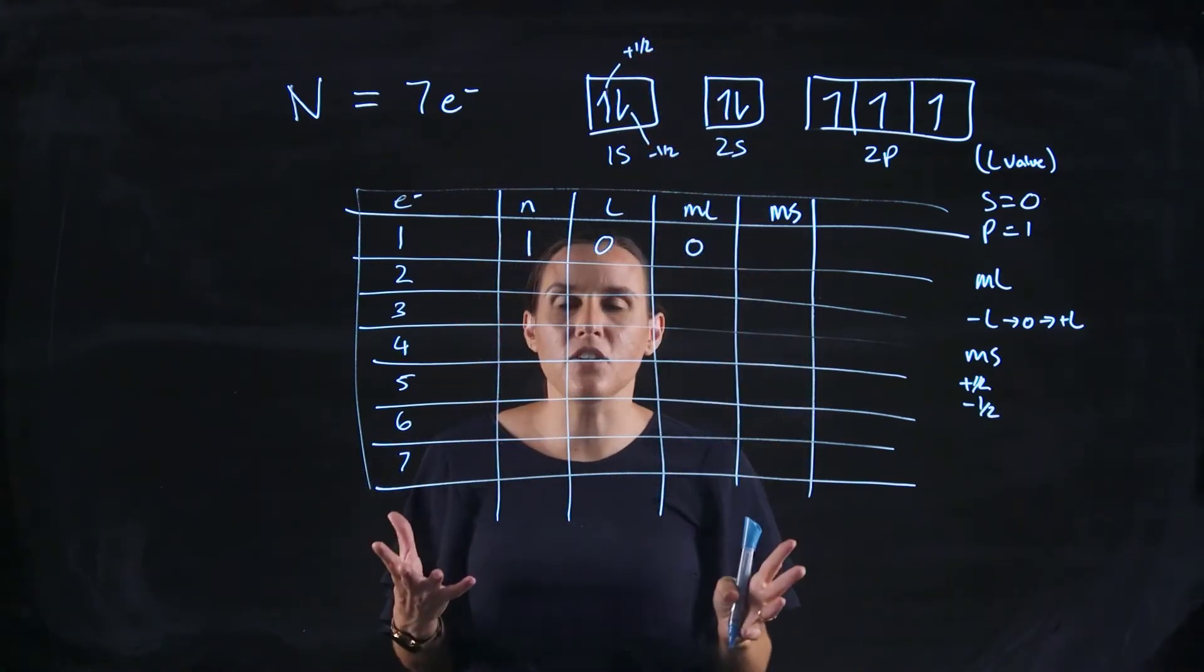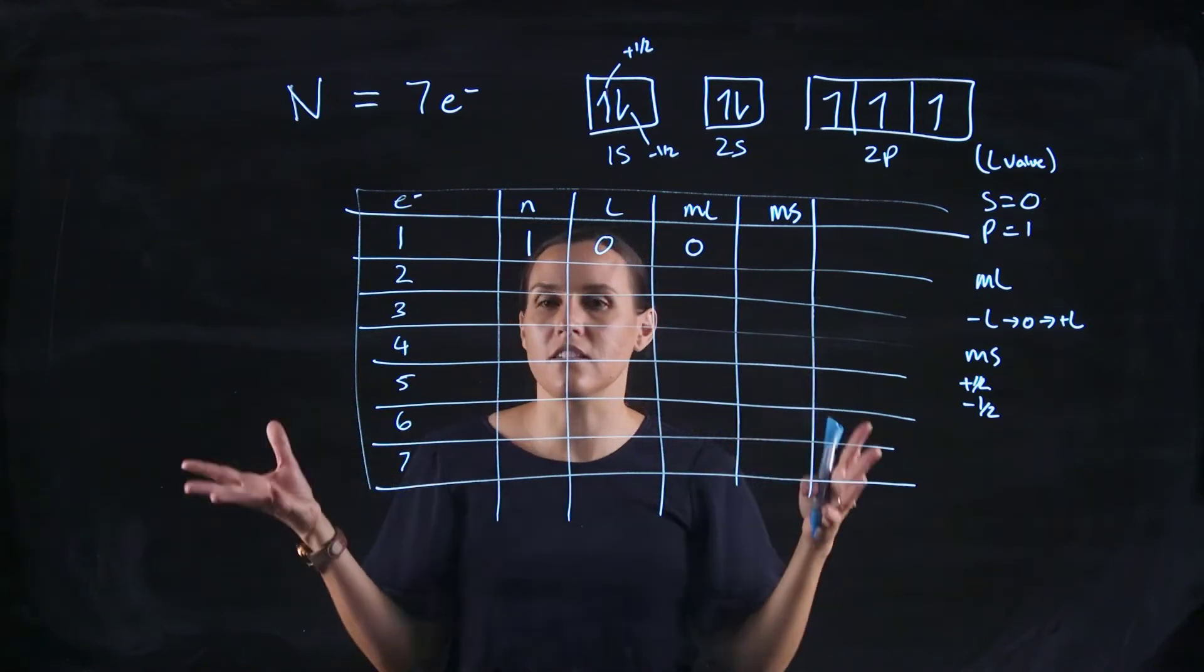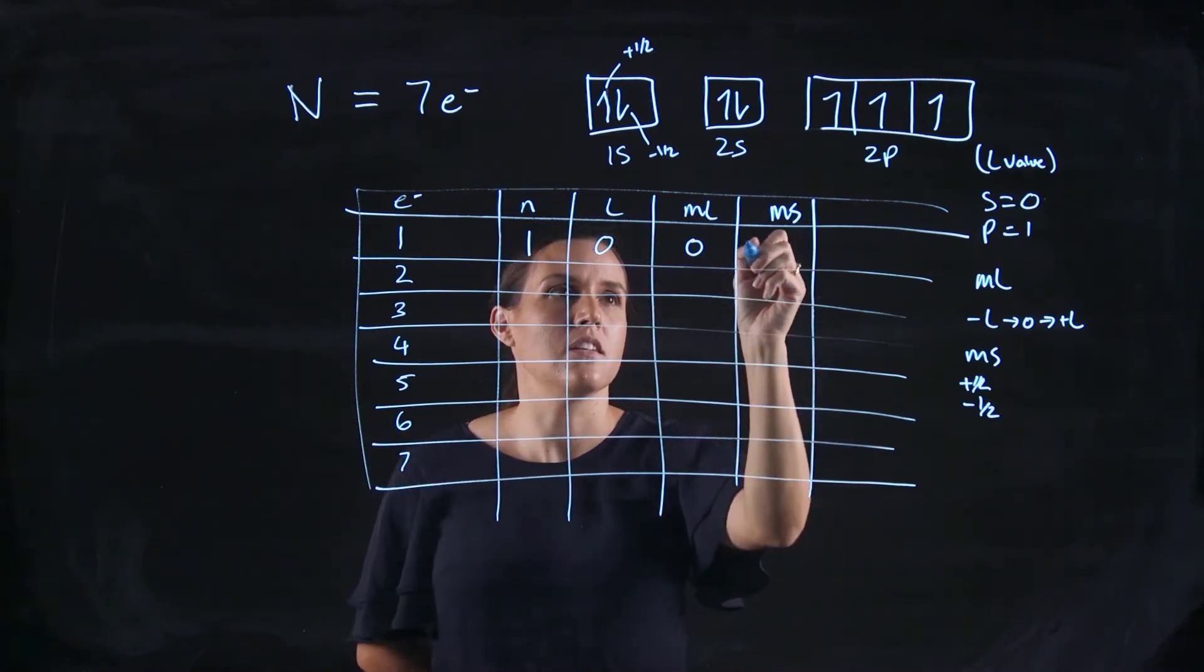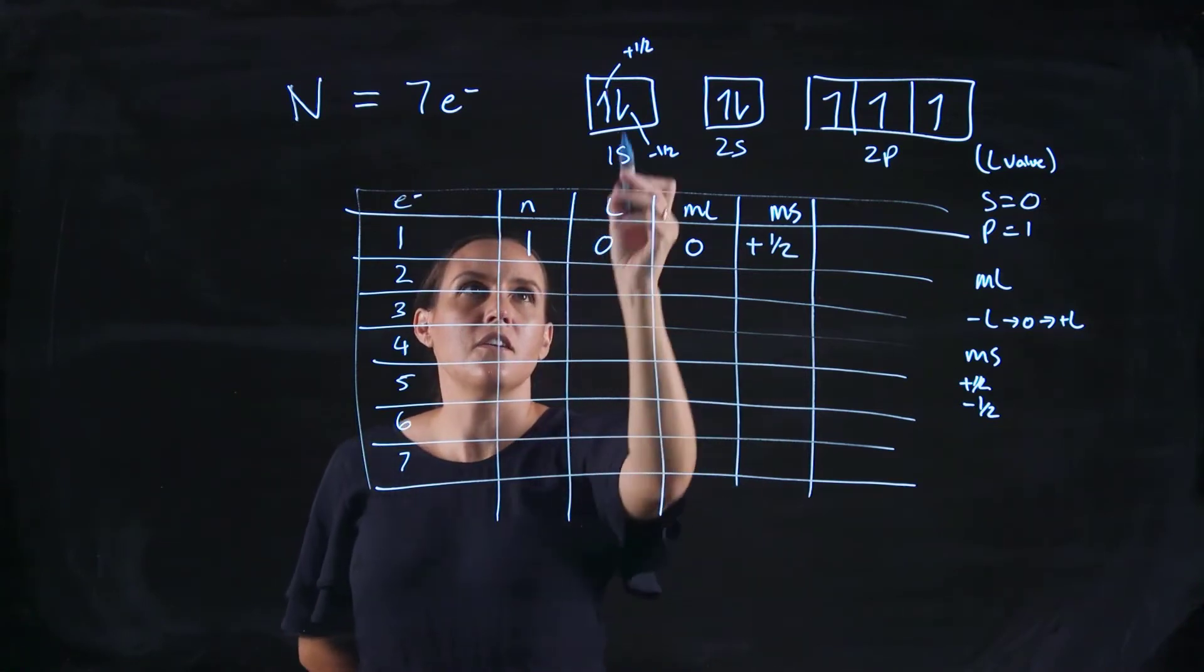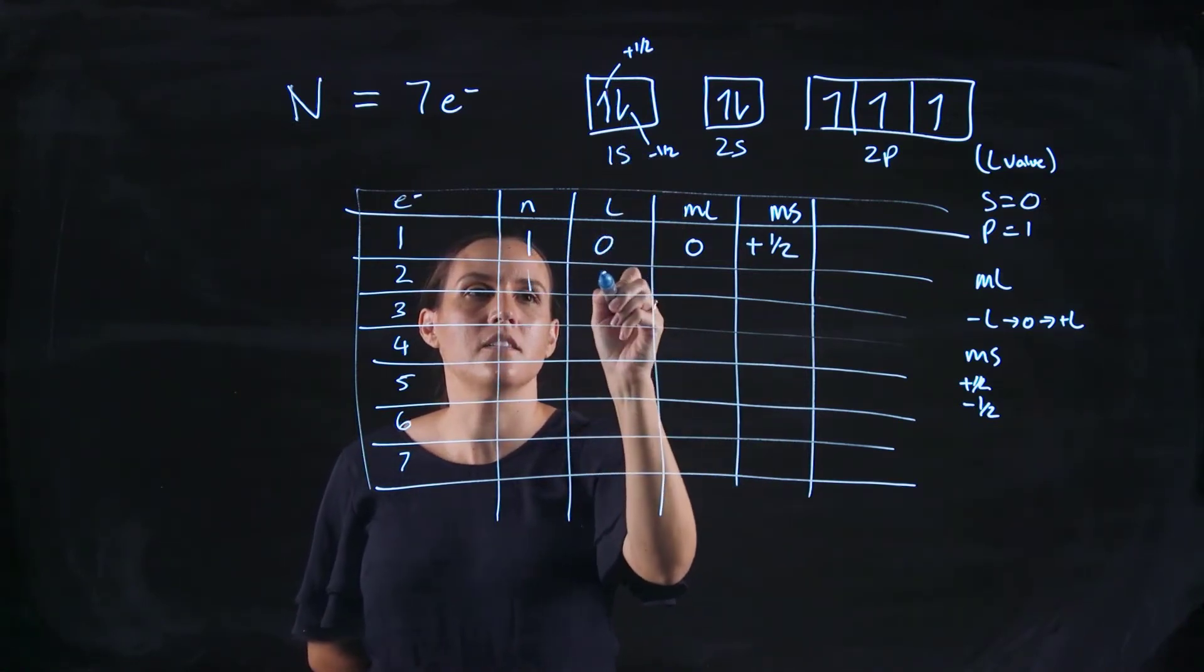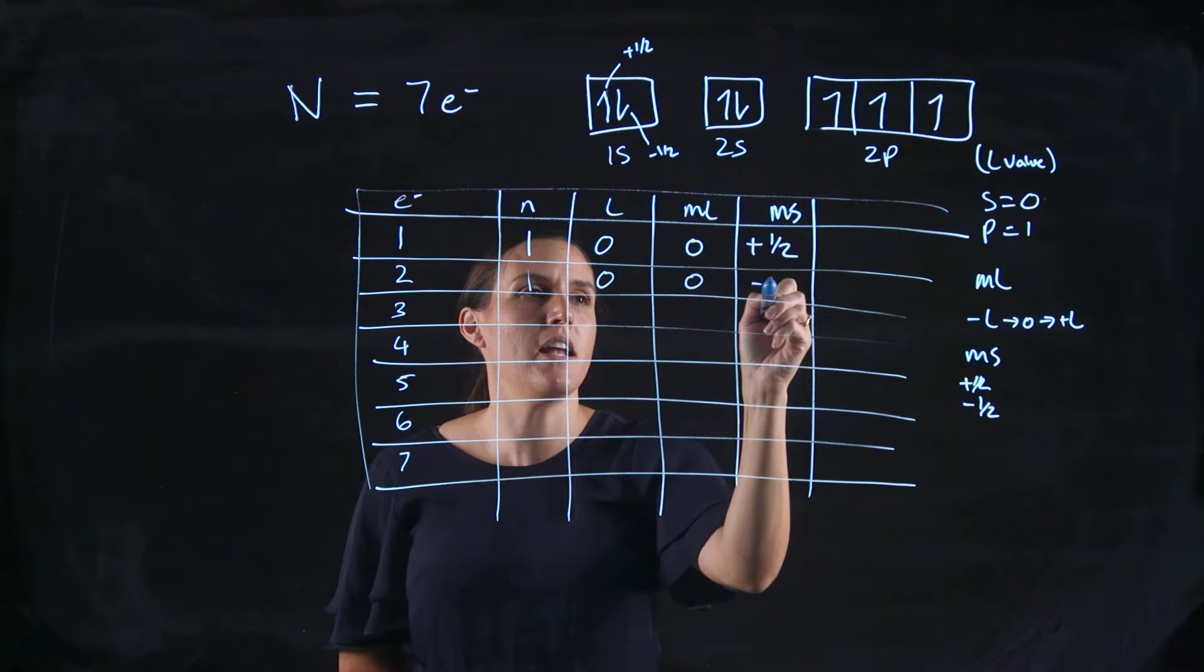It doesn't matter which way you do this, but let's just say that's what it is. So then we can just copy it straight down. Our second electron would be 1, 0, 0, and now it would be minus 1 half.